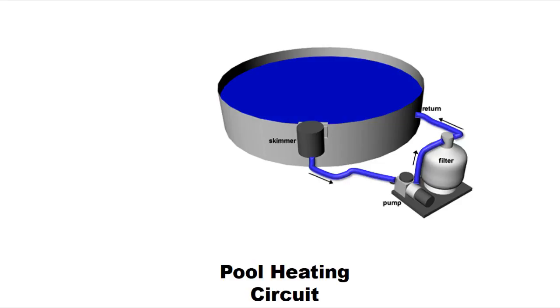What you see on the screen here is a typical pool circuit. Water is going to go through your skimmer, into your pump, through your filter, and then back into your pool. It's a simple closed loop circuit.